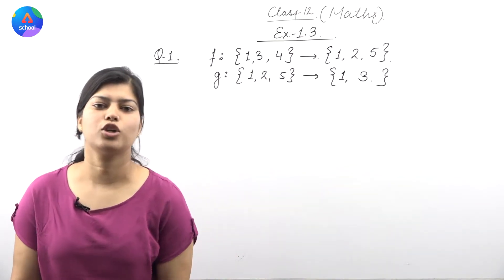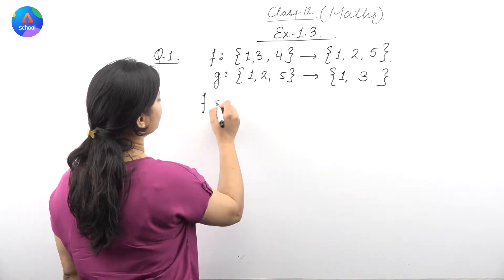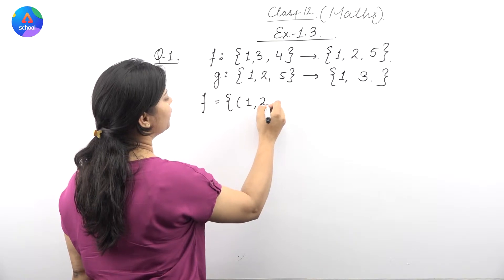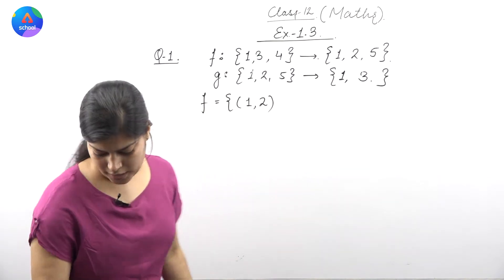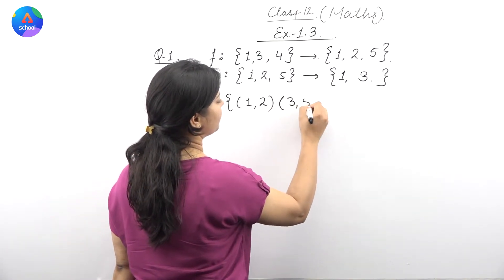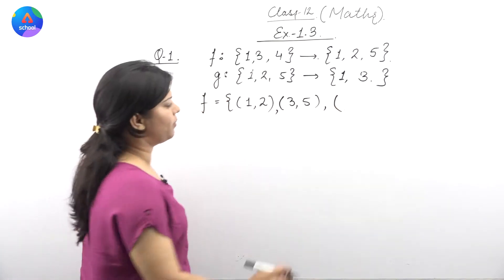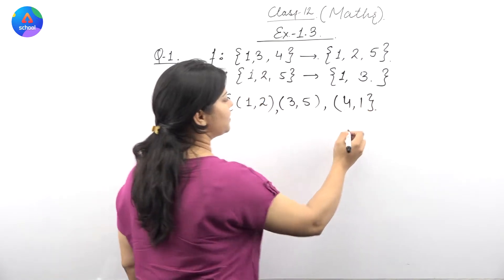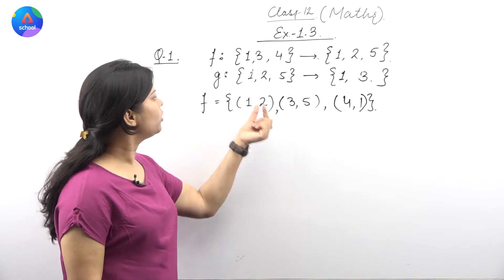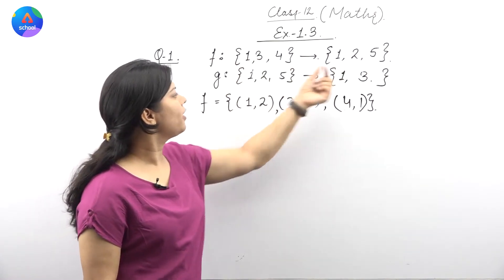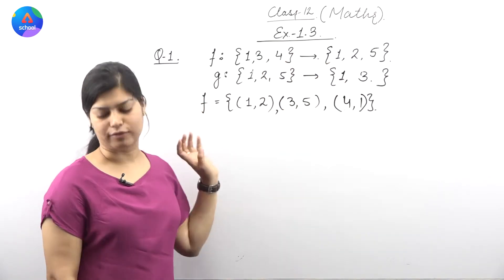We need to find F and G for each element. We are given that F is equal to: element 1 is associated to 2, element 3 maps to 5, and we have element 4 maps to 1. So under function F, 1 maps to 2, 3 maps to 5, and 4 maps to 1.